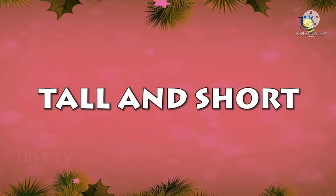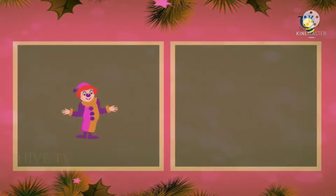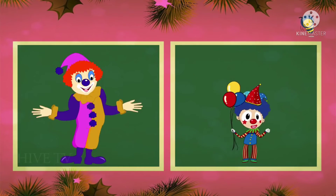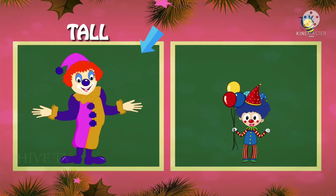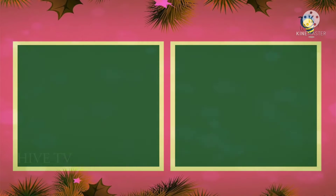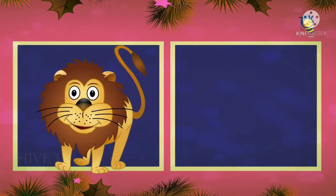Now we will learn tall and short. There are two clowns — big and small. This one is tall and this one is short. Short is very sad too.